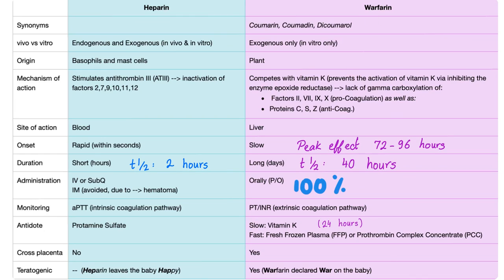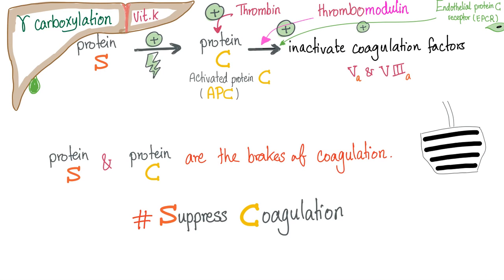You monitor warfarin using PT-INR because it acts mainly on the extrinsic coagulation pathway. If you give too much warfarin, the antidote for a slow response is vitamin K; for immediate reversal, use fresh frozen plasma or prothrombin complex concentrate. Historically whole blood was used, but it's rarely used today. Does warfarin cross the placenta? Yes — and it is teratogenic.